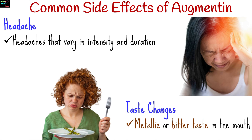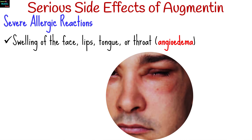Augmentin may alter taste perception in some individuals, leading to a metallic or bitter taste in the mouth. While rare, some people may experience serious allergic reactions to Augmentin. Symptoms of a severe allergic reaction may include swelling of the face, lips, tongue, or throat, what is referred to as angioedema.